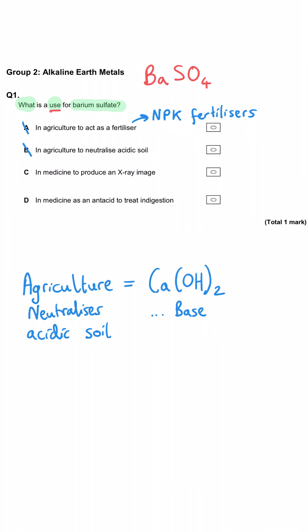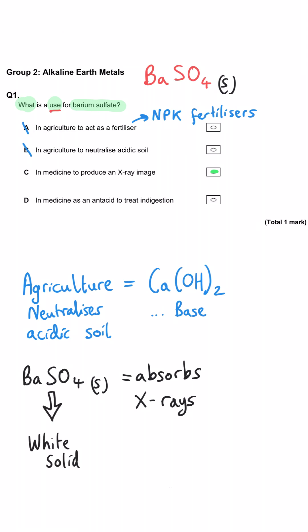Is it C, in medicine to produce an x-ray image? Yes, this is the correct answer. Barium sulphate is a chalky white solid which, when you eat it, coats the stomach, oesophagus and intestine. When you fire x-rays at it, it is photo-opaque, meaning it behaves like bone and you can get an x-ray image of the digestive system and detect problems.